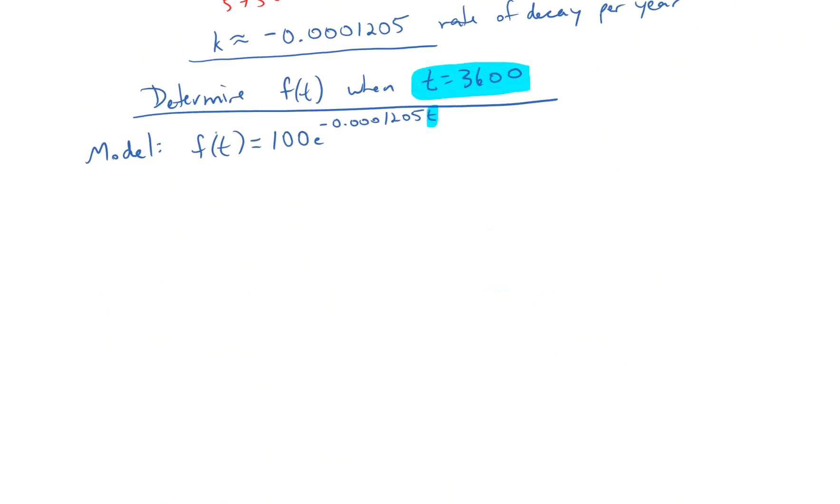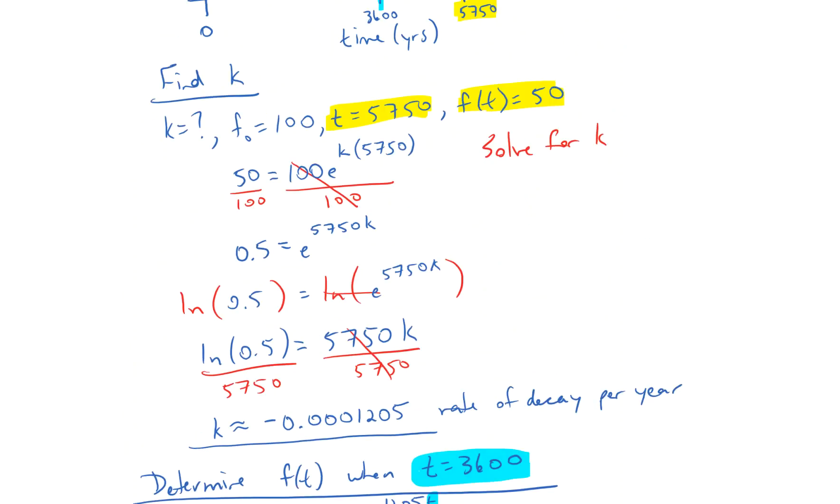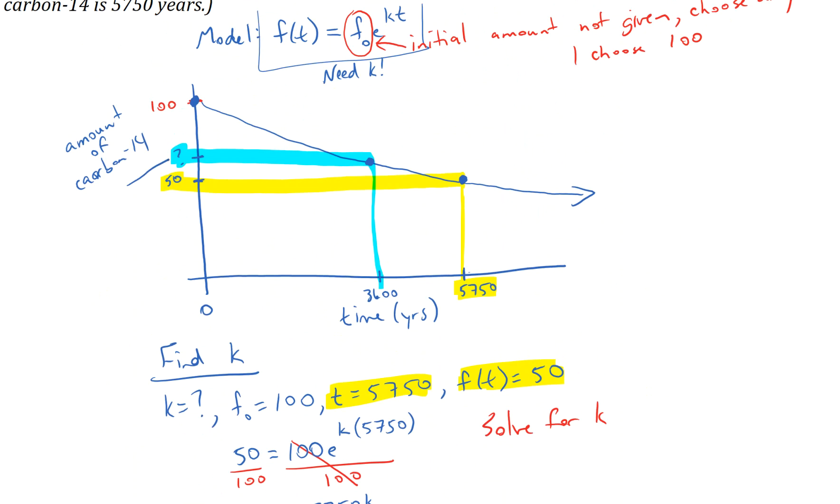So let's plug that in. So f(t) equals 100 times e to the negative 0.0001205 times 3600. And again, this is a calculator exercise. We'll plug that in. And it looks like I got approximately 64.8. So now what that means is when our time is 3600, this value here is 64.8.